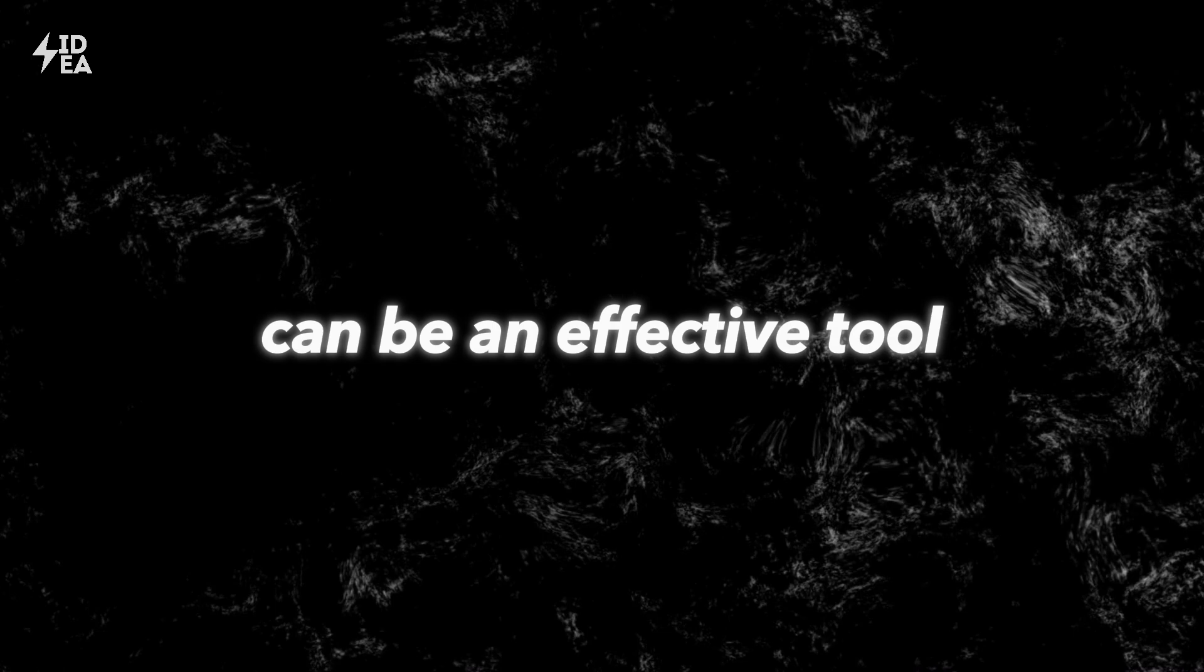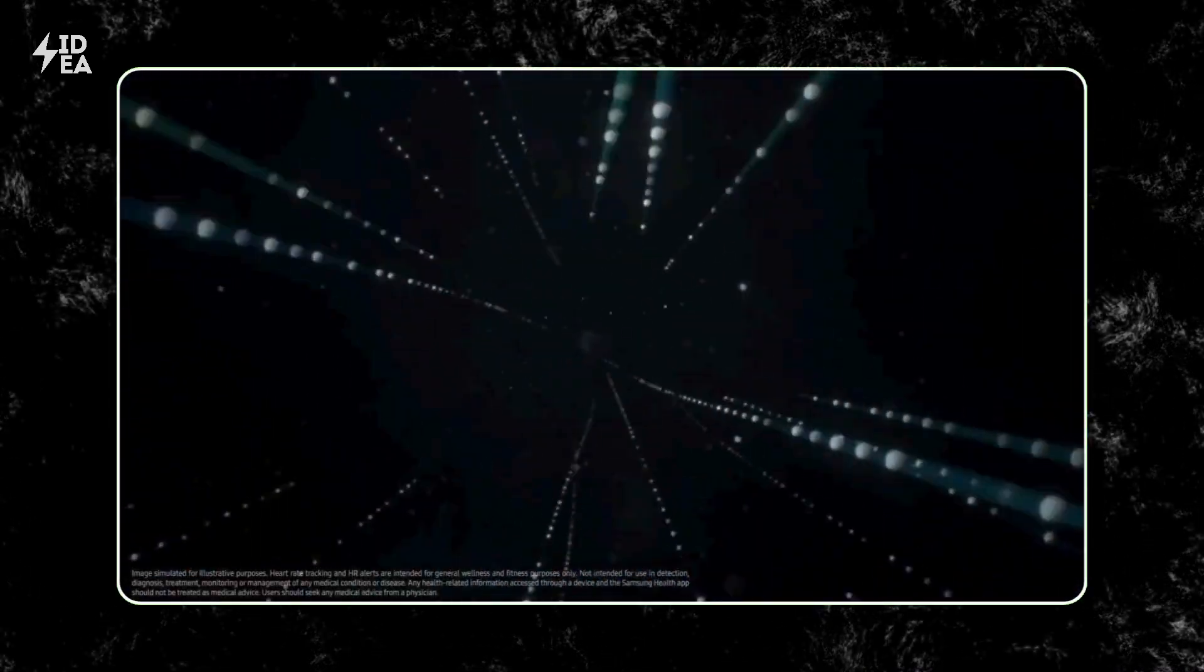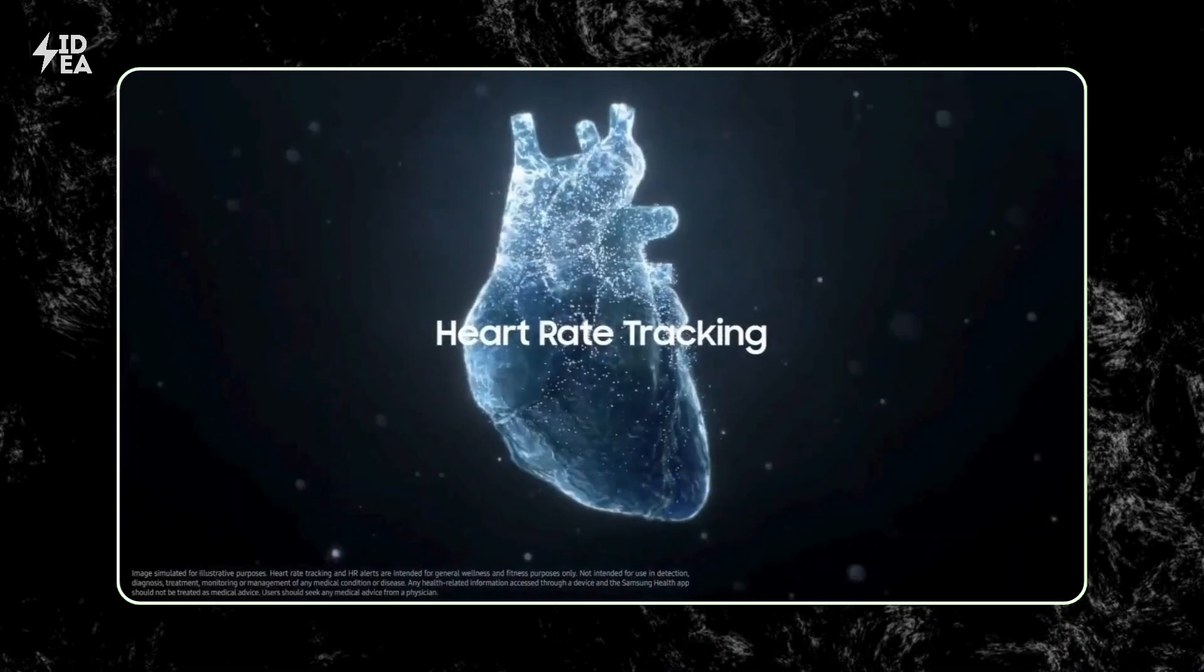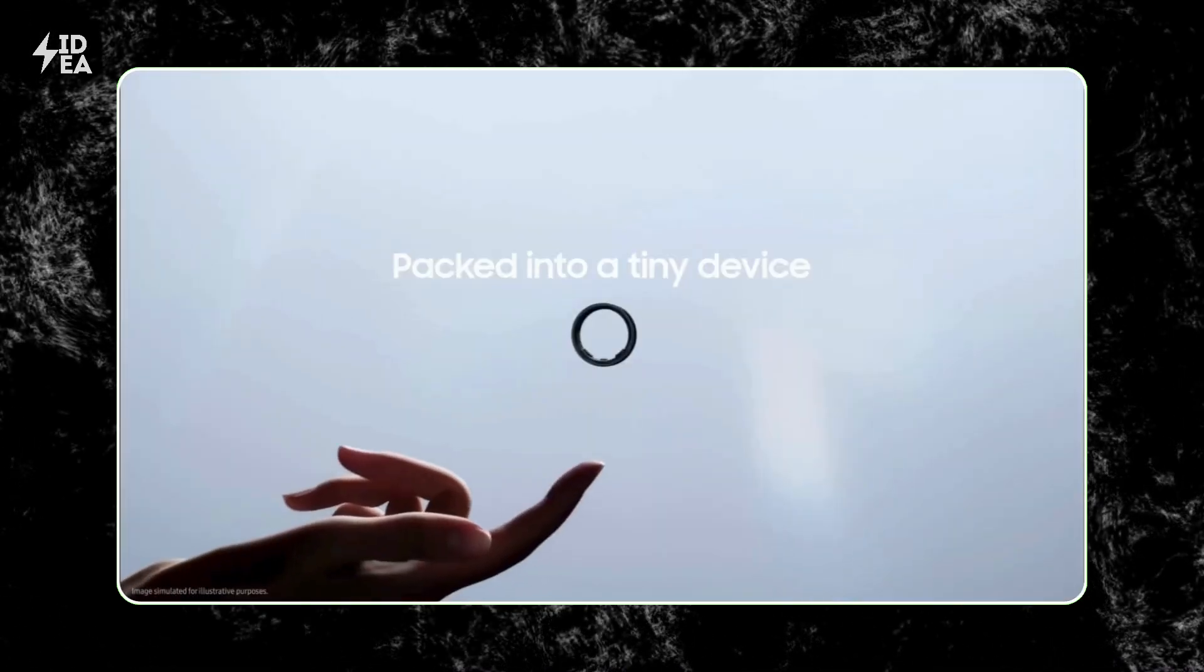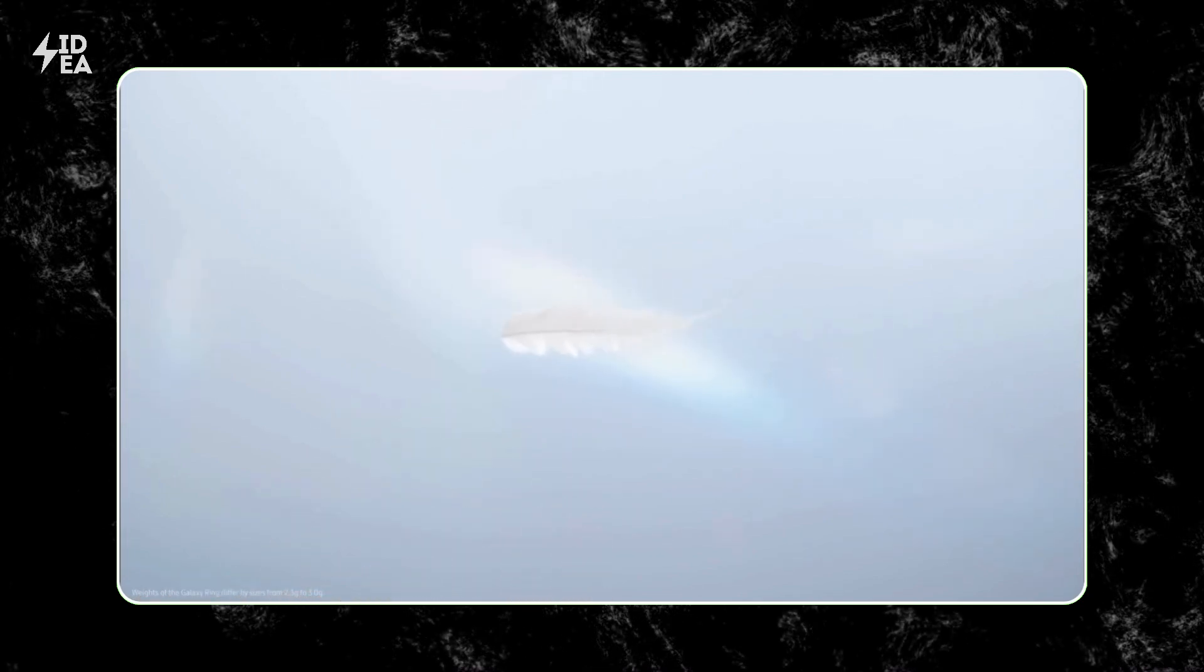Smart rings can be an effective tool for monitoring cardiovascular health, providing precise analyses of heart rate and its response to various physical activities. These rings can also monitor blood oxygen levels, which is vital for athletes and individuals with chronic health conditions.